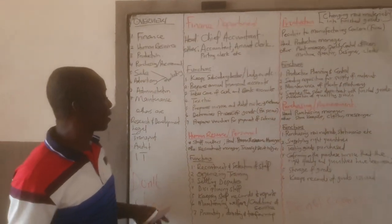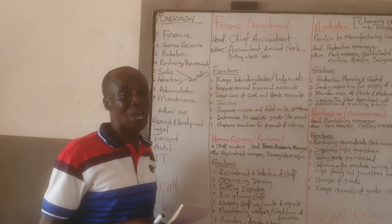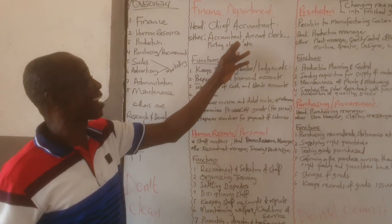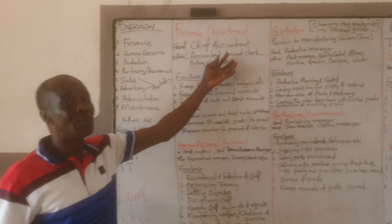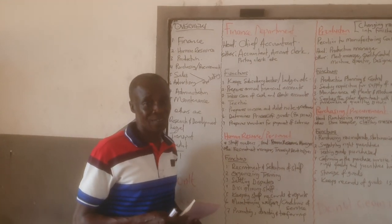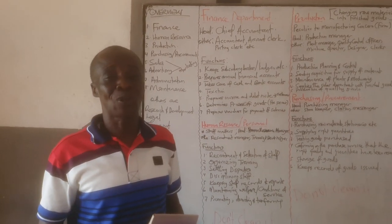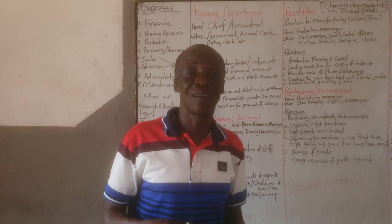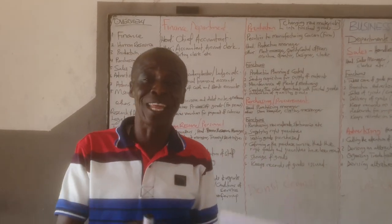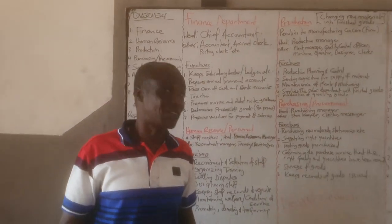The finance department also determines prices of goods — that's the role of the cost accountant. They also prepare vouchers for payment of salaries. As an employee, a voucher will be prepared showing how much is to be paid to you, with deductions for taxes and other items, so your net pay and all details are clearly shown. That covers the finance department.